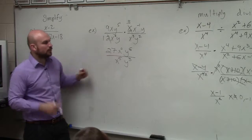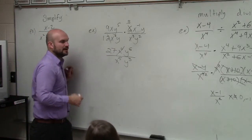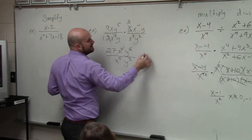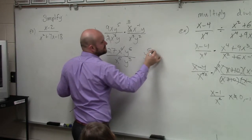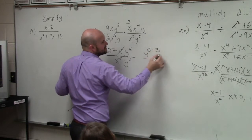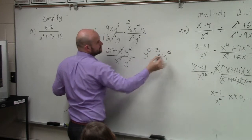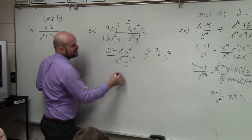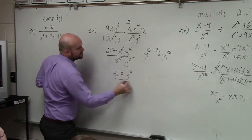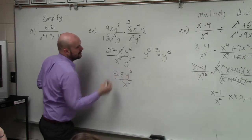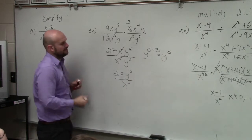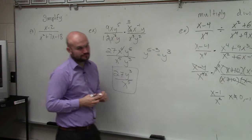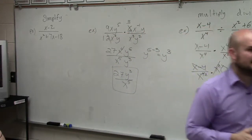This X to the 0 is going to be 1, so we don't need to worry about that. And then remember, when we're dividing exponents, we subtract the powers. So therefore, my final answer is 27Y cubed over X to the 5th, where X and Y cannot equal 0.